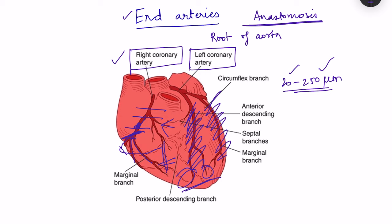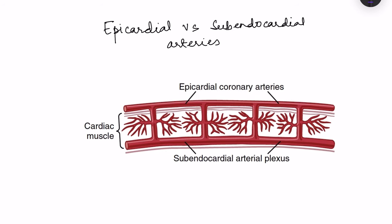As the blockage enlarges, that anastomosis may not be sufficient to prevent infarction of the cardiac muscle. Regarding the arterial layers: the major arteries are present on the surface, then branches dip into the cardiac muscle, and just below the endocardium there is a subendocardial arterial plexus. So the surface is supplied by epicardial coronary arteries, then there are intramuscular arteries, and just below the endocardial region is the subendocardial arterial plexus.